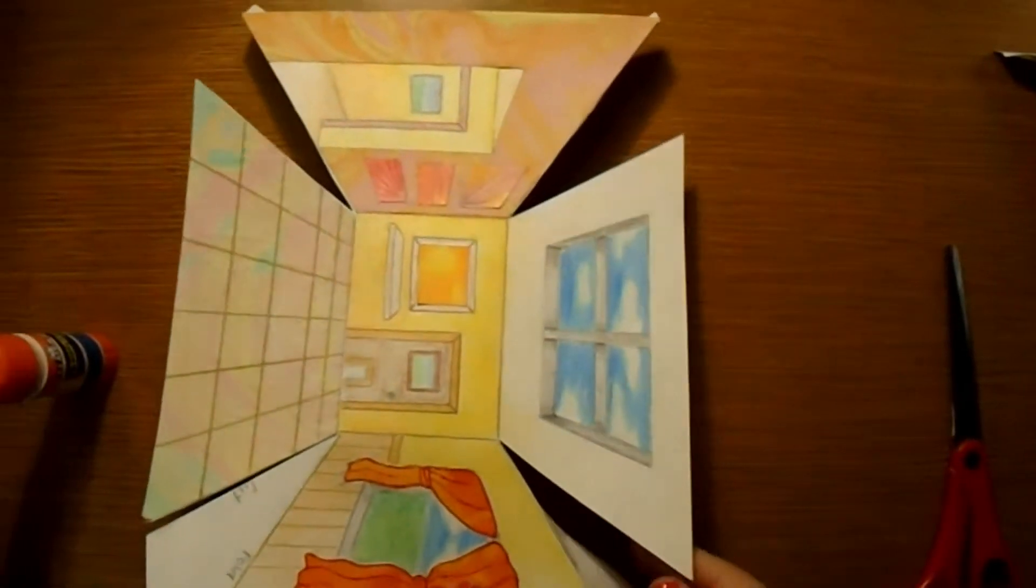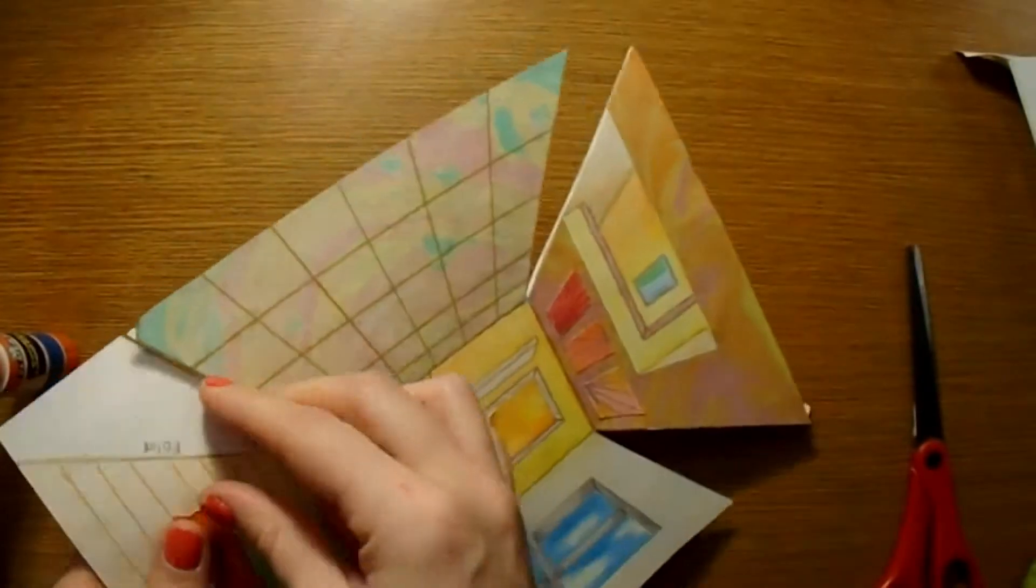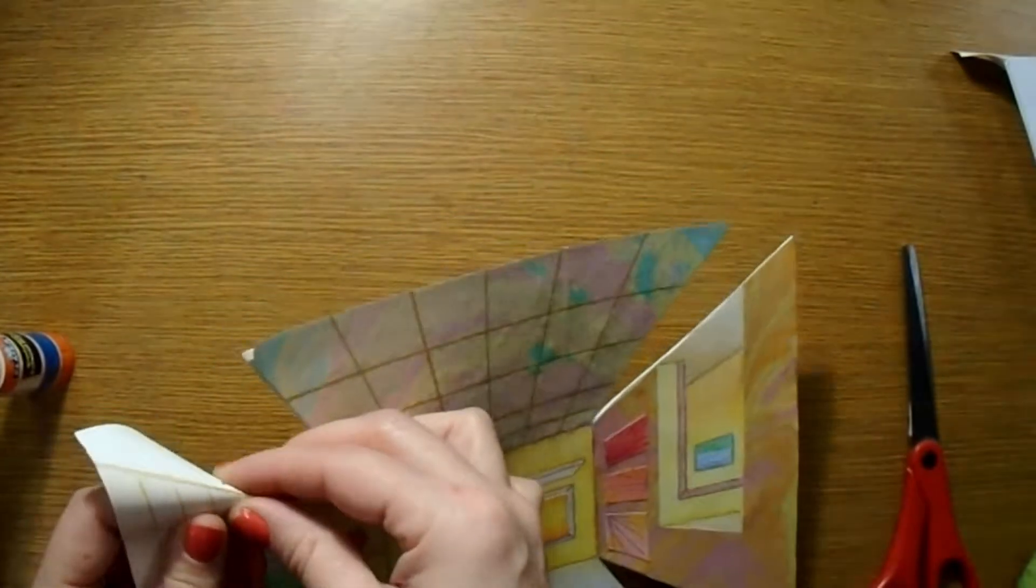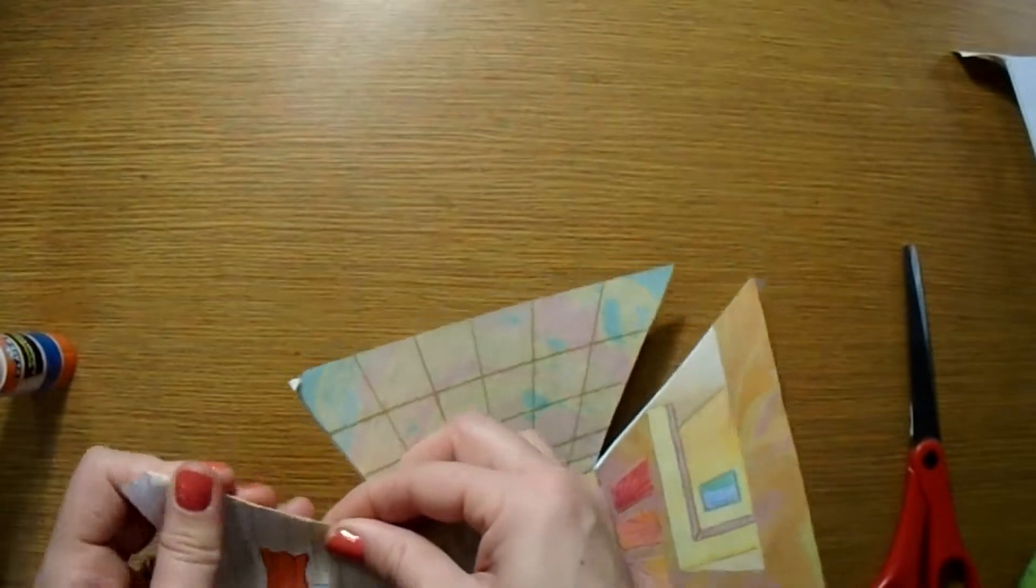So once I finish folding along the diagonal wall pieces, I also need to fold along all four walls or all four sides of the back wall.